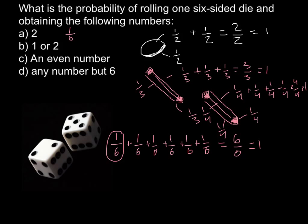Question B: one or two. We are asked what is the probability to get the side with number one or the side with number two. This is also easy to solve — we just have to add these probabilities, and what we'll get is two over six. We can simplify it like one over three, just divide by two. So the correct answer for question B is one third.